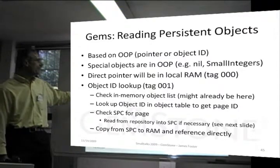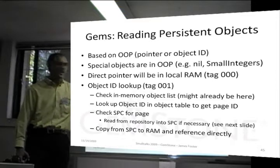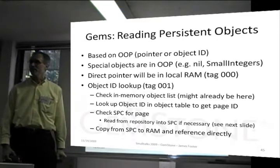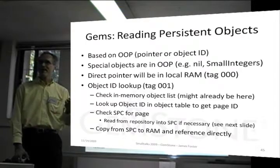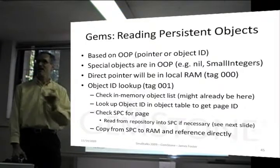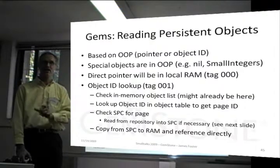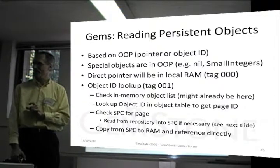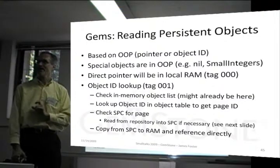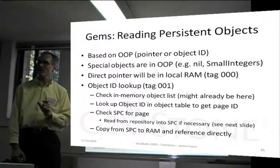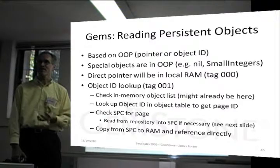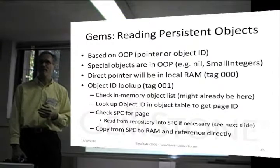The special objects are already in the OOP. So if we recognize that an instance variable has some object reference in it, and we recognize that it's a special, then we don't have to go to the disk — it's already there, we just reference it.